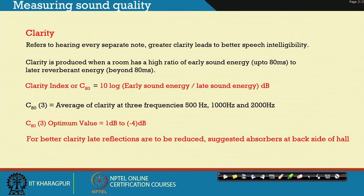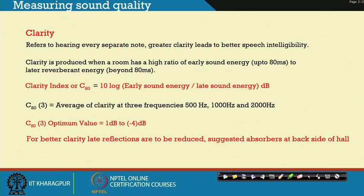Clarity index or C80 is: 10 log (early sound energy / late sound energy) in decibels. The frequency average C83 is calculated at 500 Hz, 1000 Hz, and 2000 Hz. The average clarity of these three frequencies gives C83, and the optimum value is −4 dB to +1 dB. The minus sign is because it is a reference comparative scale referenced from zero.